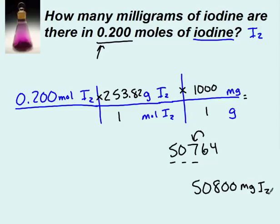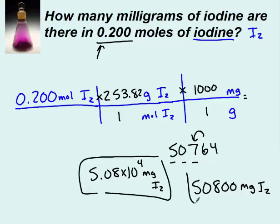So that's one way I could have written my answer. The other way I could have put it in scientific notation. It said 5.08 times 10 to the 1, 2, 3, 4 milligrams of iodine. The problem didn't specify if it had to be in scientific notation. So either of the boxed answers are correct. But you did need the answers that are written there, not 507, not 50700, but the two answers in the boxes.